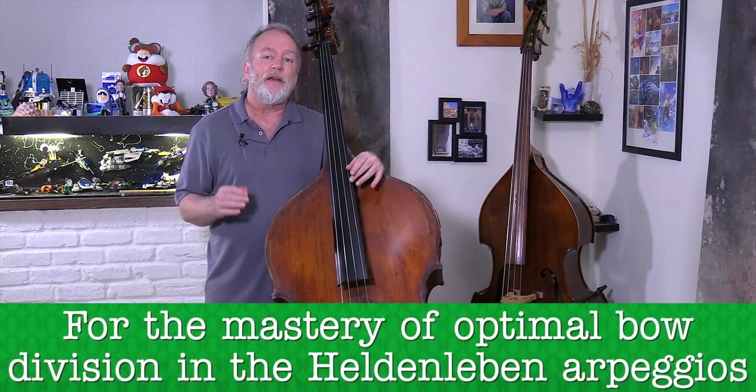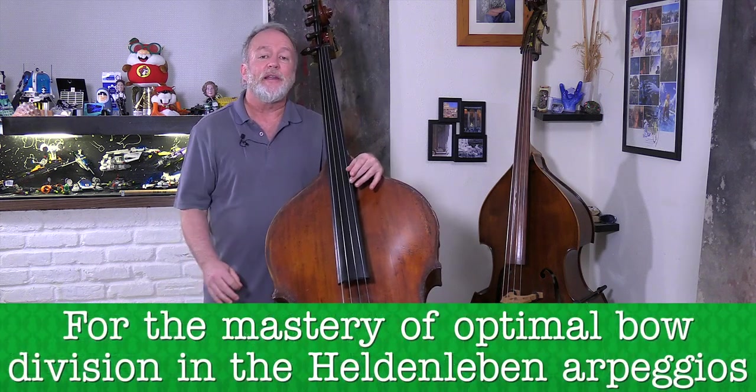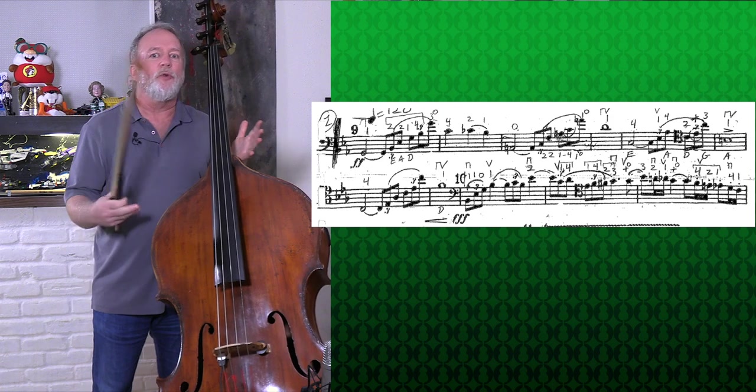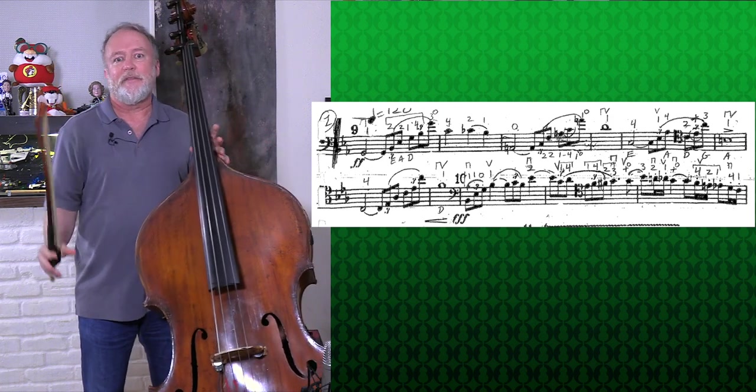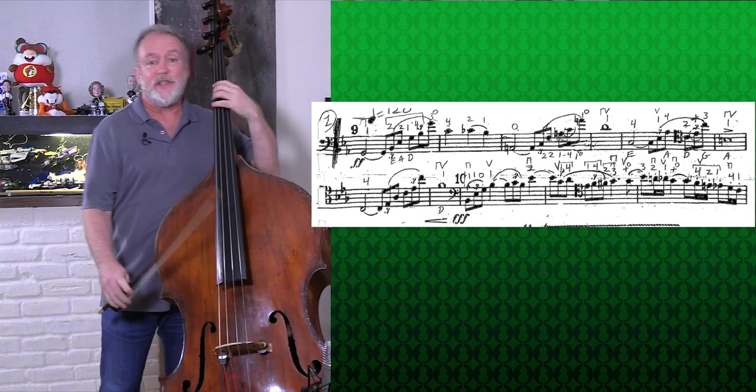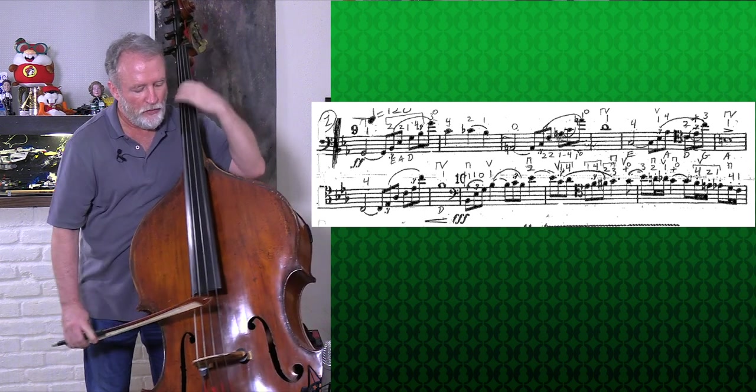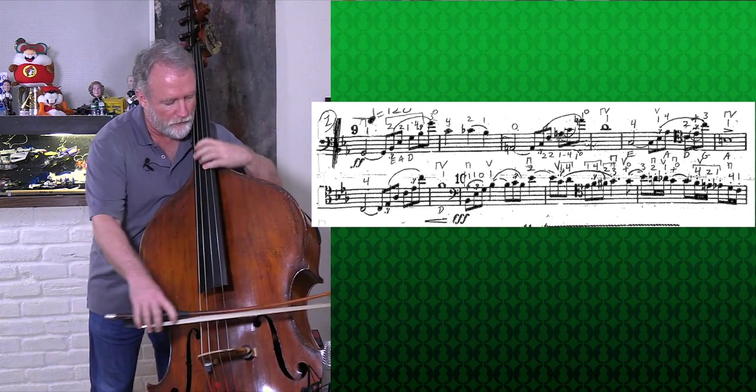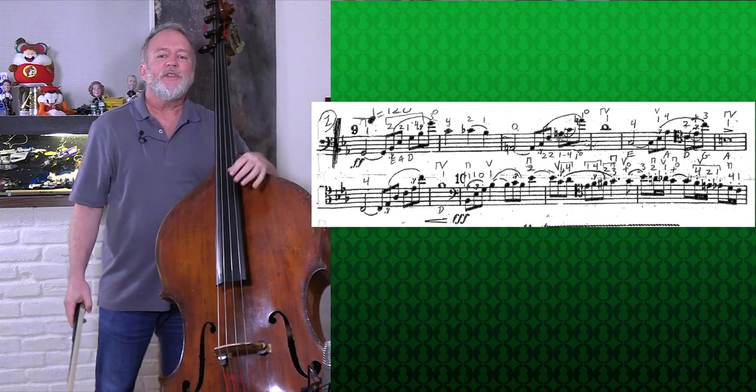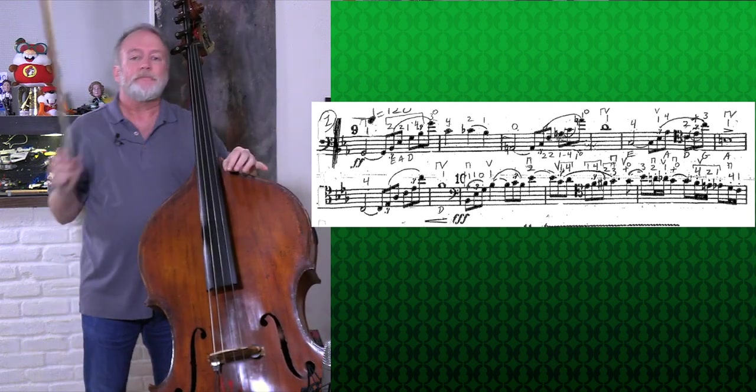I practice this exercise for the mastery of optimal bow division in the Heldenleben arpeggios. You may have different fingerings which will present minor bow division differences, but nothing too drastic. Use whichever fingering you can execute the best. Here's the opening arpeggio at number nine along with my sloppy personal copy that I've had with me for over 20 years of study.